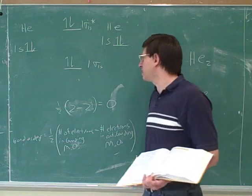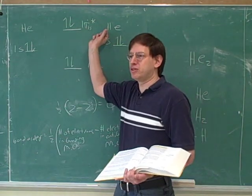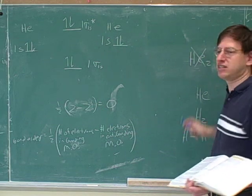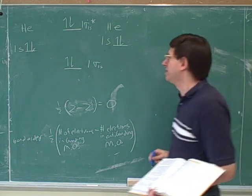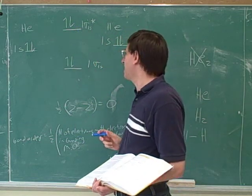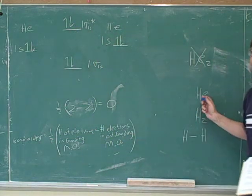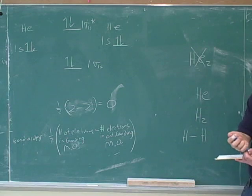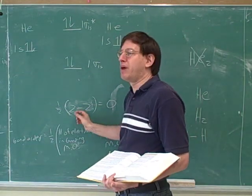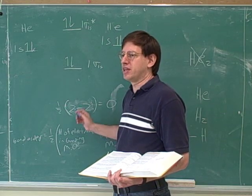And what this is telling us is the theory is predicting that there won't be a bond between two helium atoms, which is what we already said. This species doesn't actually exist in nature. So it's another success for the molecular orbital theory. Now we're able to explain why helium prefers to be monatomic rather than diatomic.